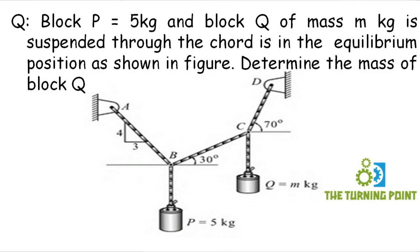Block P is equal to 5 kg and block Q of mass m kg is suspended through cables in the equilibrium position as shown in the figure. Determine the mass of block Q. Observing the given figure, it is a system of connected flexible cables. You have to find the mass m only.